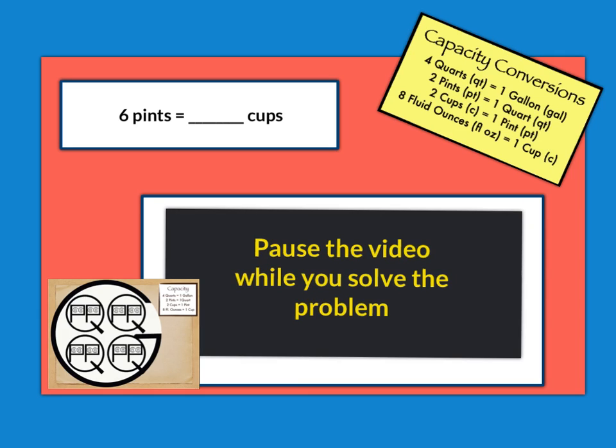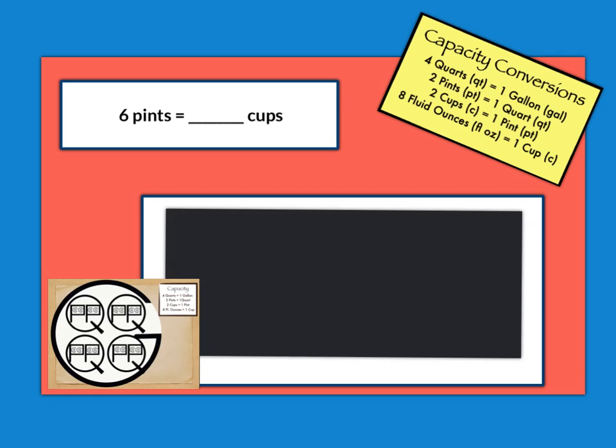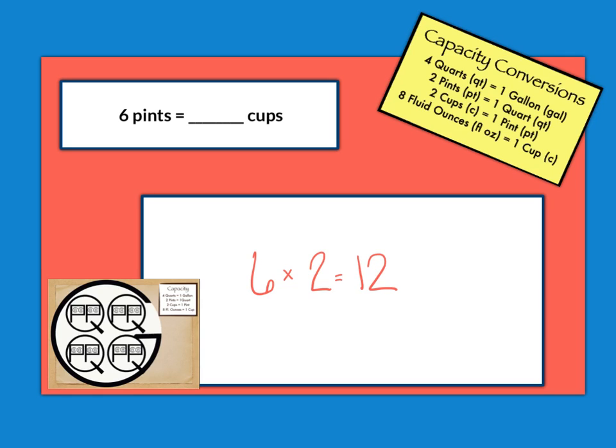Hopefully you had enough time to solve the problem. So we're going to go over our answer here. I'm going from 6 pints to cups. Pints is the larger unit and cups is the smaller unit. So you're going to need a lot more cups than you would pints. And here I can see that it's going to take 2 cups for each pint. So I'm going to be multiplying. And I'm going to multiply 6 by 2 to get my answer of 12. There are 12 cups in 6 pints.